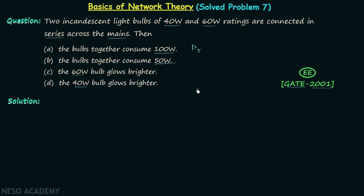Before moving to the solution, we will first understand what incandescent means. Incandescent means emission of light when an element is heated. The bulbs consist of an element that provides resistance to current flow, causing power to be dissipated as heat, which results in the emission of light and the bulbs glowing.